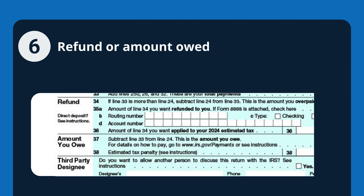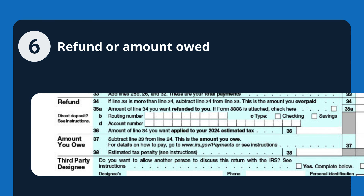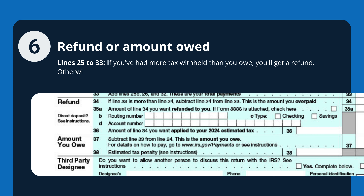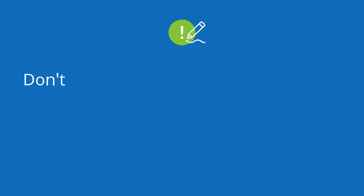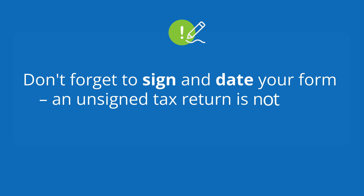Finally, determine your refund or amount owed. On lines 25 to 33, if you've had more tax withheld than you owe, you'll get a refund. Otherwise, if you owe money, indicate the amount. Don't forget to sign and date your form — an unsigned tax return is not valid.